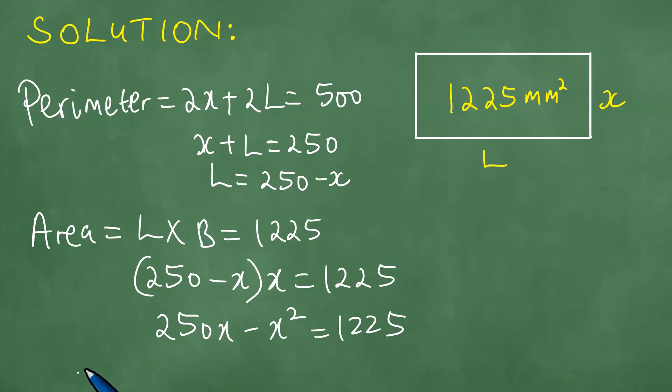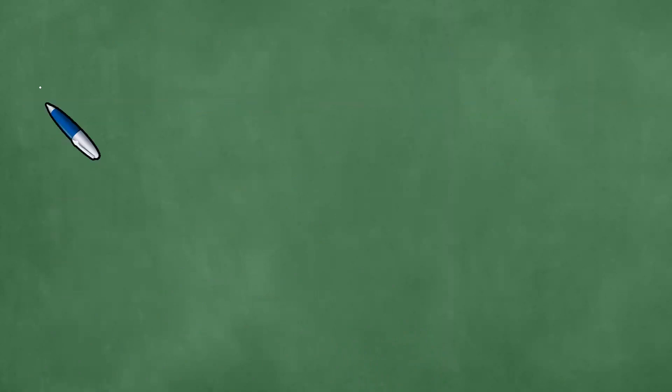So what is the meaning of this now? Therefore, if we have this, we rearrange: 250x minus x squared equals 1225.